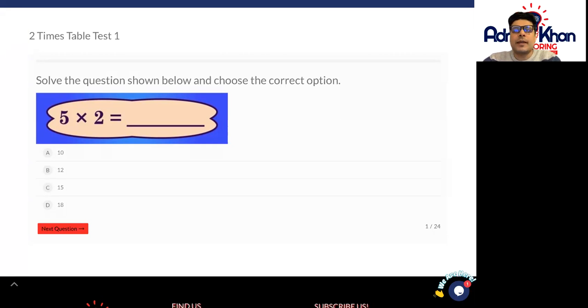So I would recommend that what you can do is option number one, you can write down your entire two times table all the way up to 12. So two times one is two, two times two is four, two times three is six and so on.